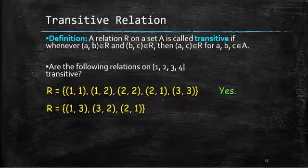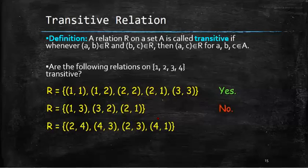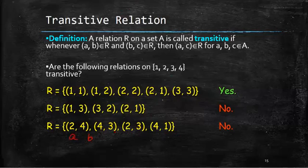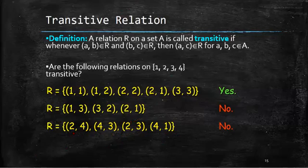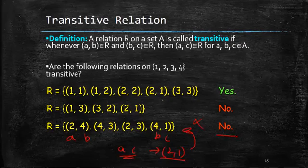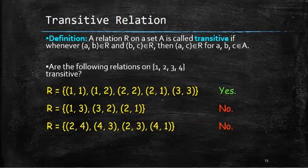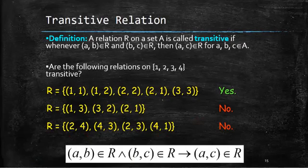Now the next example: the relation is {(2, 4), (4, 3), (2, 3), (4, 1)}. If we take (2, 4) as A, B and (4, 3) as B, C, then we need A, C which is (2, 3) — it is there. Now again let's take (2, 4) as A, B. We have (4, 1) which can be taken as B, C. A, C should be (2, 1). Is (2, 1) in this relation? No, it is not. So it is not a transitive relation.